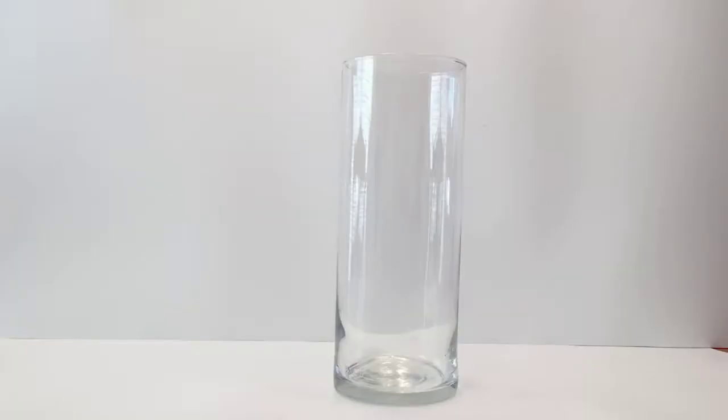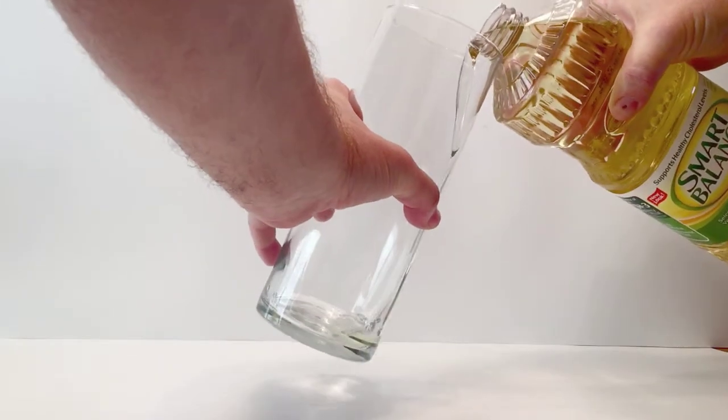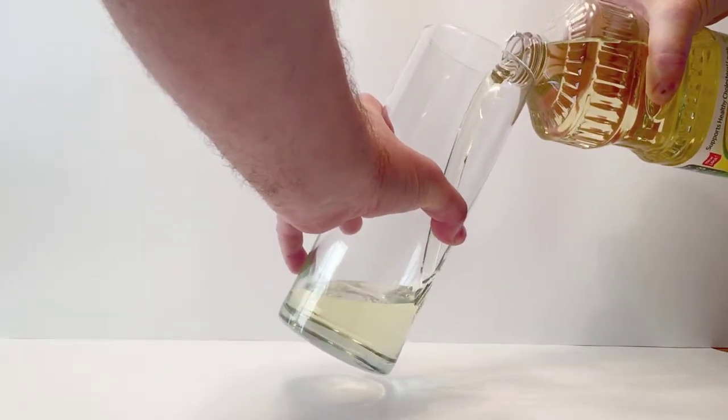Start off with a glass or vase and fill it up about halfway full of veggie oil. In this case I'm using corn oil, just some kind of oil, that's what I had in the cabinet.